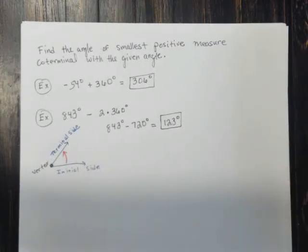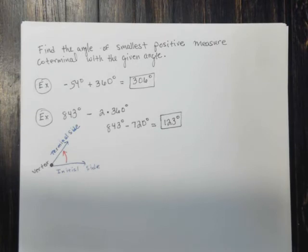Hopefully this makes sense. Just review the definition about coterminal angles. Remember, they're angles which have the same initial side and the same terminal side, but differ by the amounts of rotation - meaning their measure will differ by a multiple of 360 degrees.